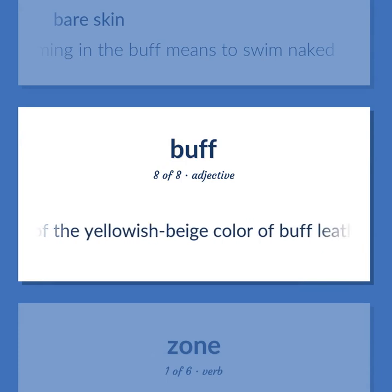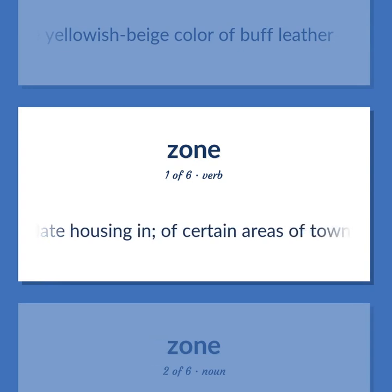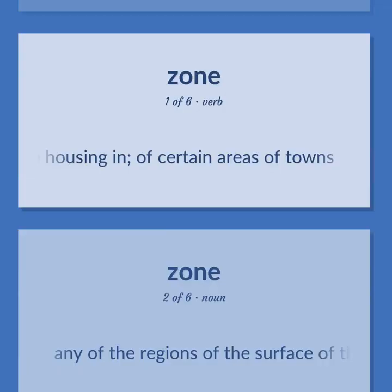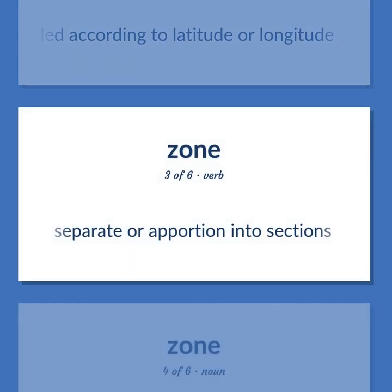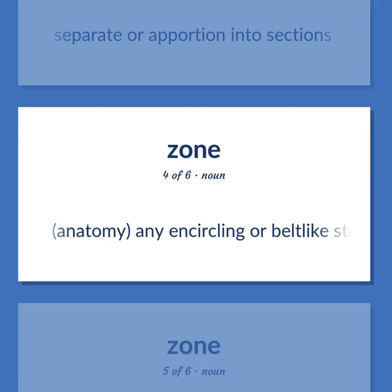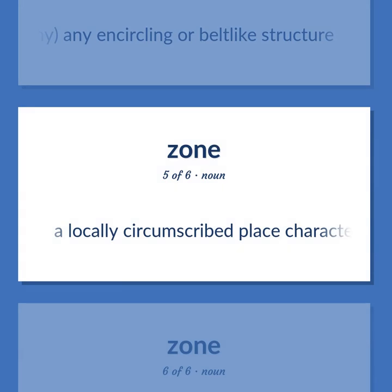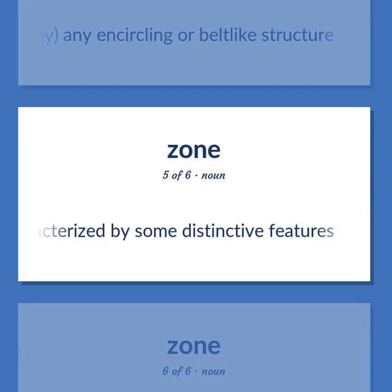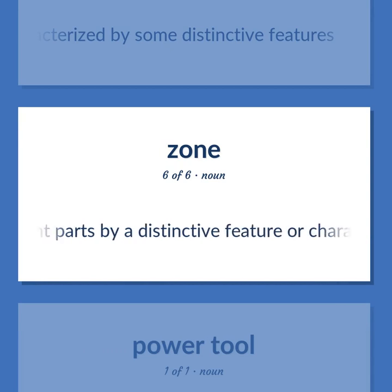Buff: of the yellowish-beige color of buff leather. Zone: regulate housing in certain areas of towns. Any of the regions of the surface of the earth loosely divided according to latitude or longitude. Separate or portion into sections. Anatomy: any encircling or belt-like structure. A locally circumscribed place characterized by some distinctive features. An area or region distinguished from adjacent parts by a distinctive feature or characteristic.